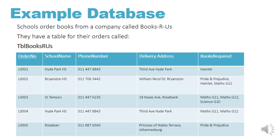We're going to work with this example database. It's for a company called Books R Us, where schools order books from it. They have a table for their orders called Table Books R Us. It has an order number, the school's name placing the order, their phone number, their delivery address, and the books that they require.